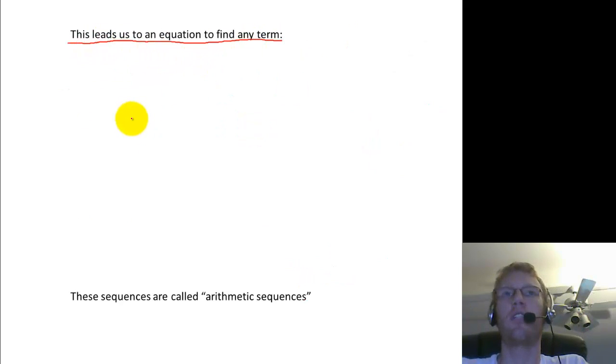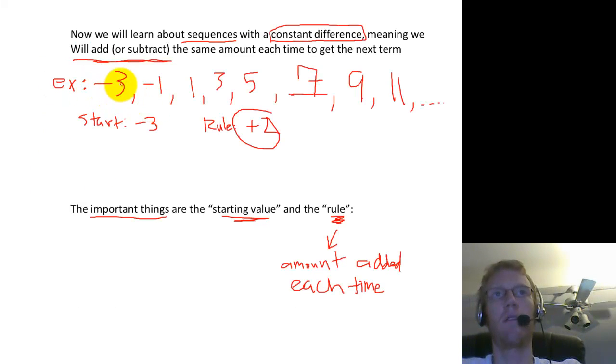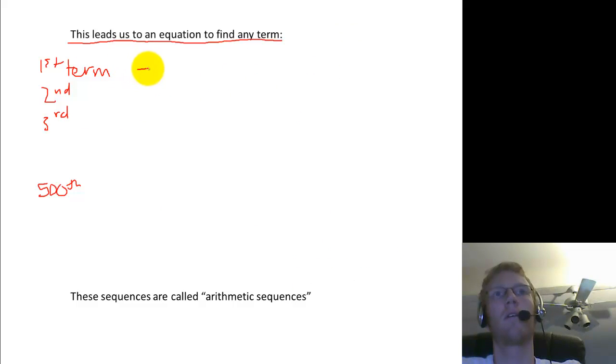Okay? So this leads us to an equation. So if you think about it, if you have the first term, and then the second, and then the third, and then you want to go all the way to the 500th. So let's use the same sequence we had before where we started at negative 3, and then we had negative 1, and then we had 1. And we're trying to find what's this 500th term. Well, to get from the first term to the second term, I had to step forward one time. So I had to add 2, which was the rule. I had to add 2 one time.